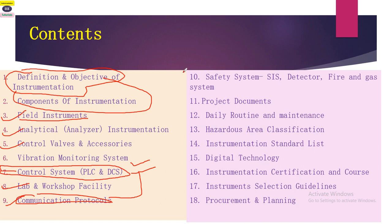The tenth point covers safety systems — safety instrumentation systems, detectors, and fire and gas systems. Whenever there is any fire, small or large, fire and gas systems help manage the situation. These form the core of plant safety systems.